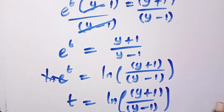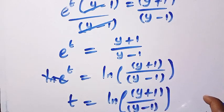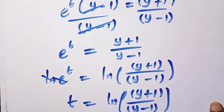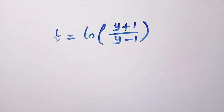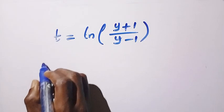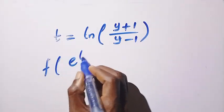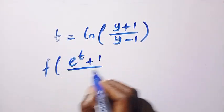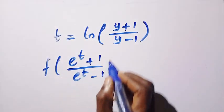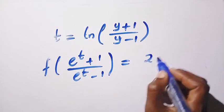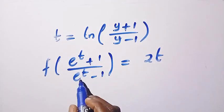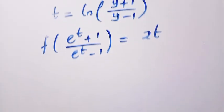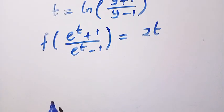We are going to replace the substitution of t into the original equation. Let's recall from the given problem: f[(e^t + 1)/(e^t - 1)] = 2t, and we let (e^t + 1)/(e^t - 1) equal y.